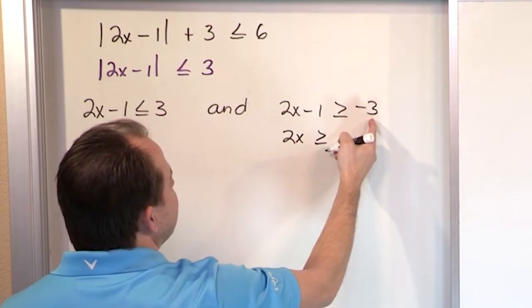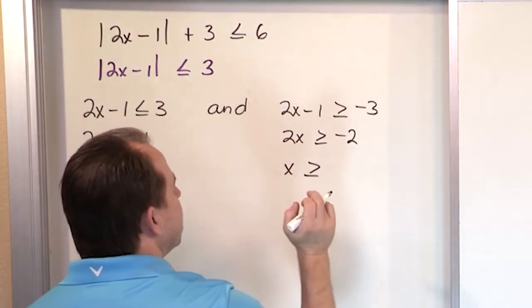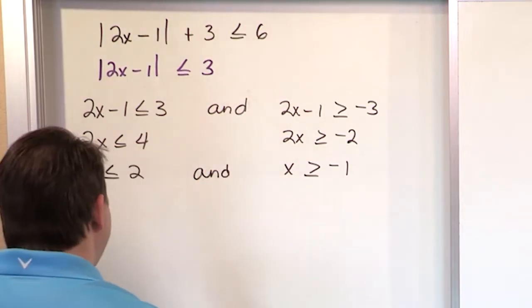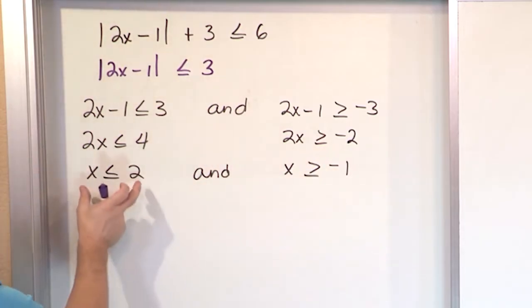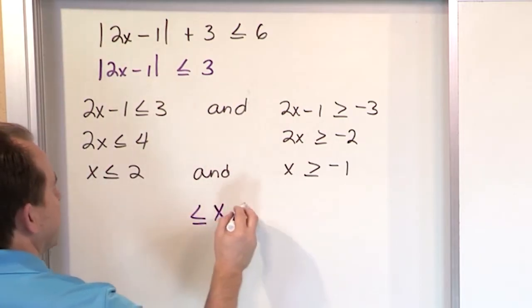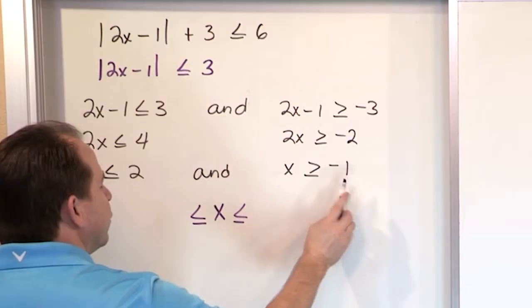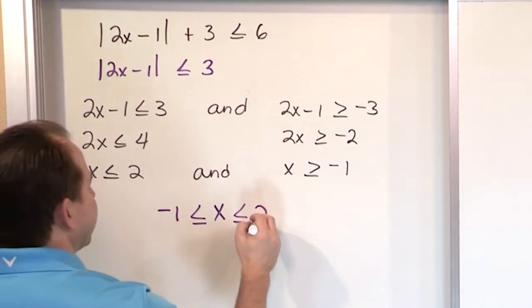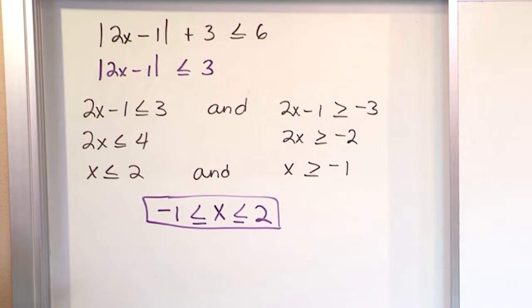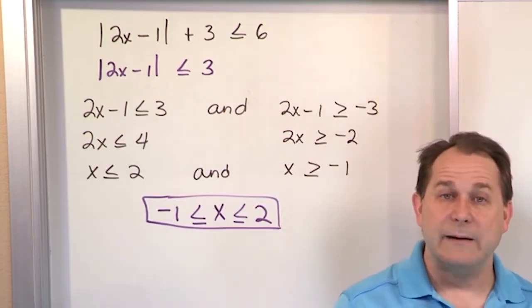What is 4 divided by 2? It's 2. Now the similar deal on the other side: add 1. What is negative 3 plus 1? It gives you negative 2. Then x is greater than or equal to negative 2 divided by positive 2, which is negative 1. So you have x greater than or equal to negative 1 and less than or equal to 2. You write that as a compound inequality: negative 1 less than or equal to x less than or equal to positive 2.